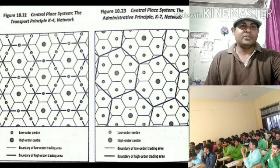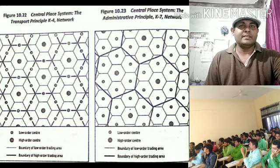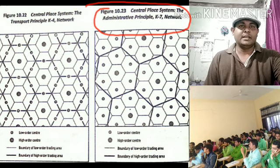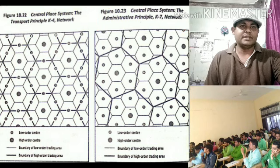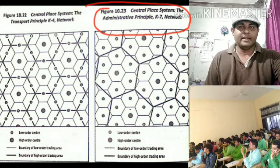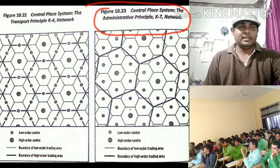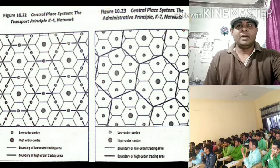The administrative principle assumes that the central government would not risk the subdivision of an area or region. Thus, the higher-order tier is built up through the addition of whole regions. This gives the K=7 situation, where the center serves itself plus six lower-order centers entirely. Under the K=7 network, the settlement count is 1, 6, 42, 294, 2058, and 14406 — that is, up to 14406 settlements.